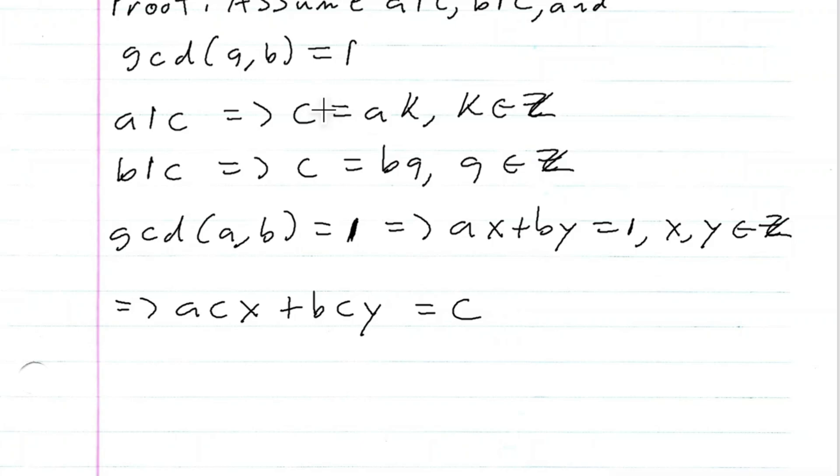And as you can see here, I want AB in both terms, so I can substitute the C here with BQ. So this implies that A times BQX plus B times, and then I'm going to substitute this C here with AK, so AKY is equal to C.